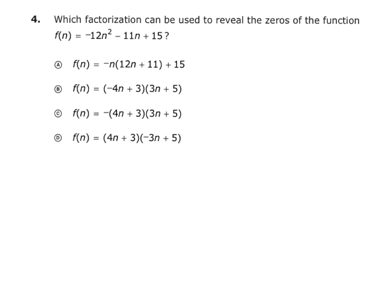So this one says, which factorization can be used to reveal the zeros of the function f(n) equals negative 12n squared minus 11n plus 5? Well, there is no way on the planet Earth just to look at these and know the answer. So you don't need to look at this and think, okay, I think it's A. You can't do that.